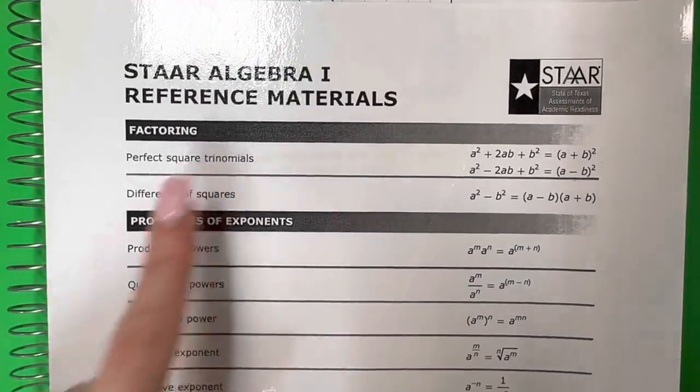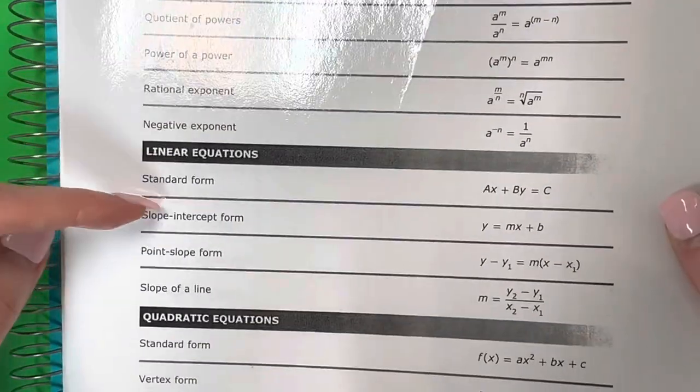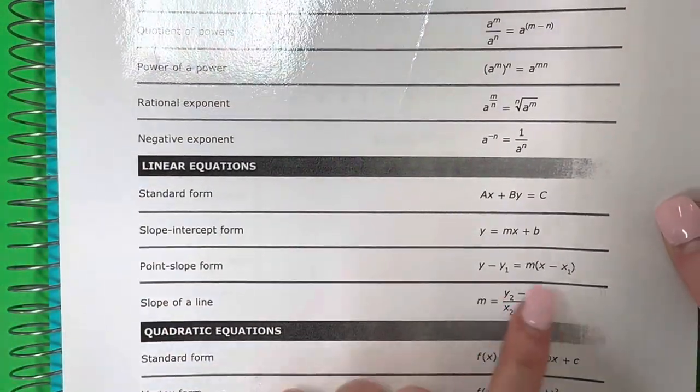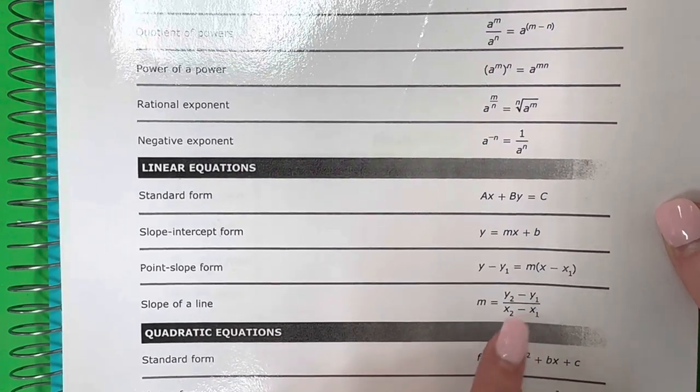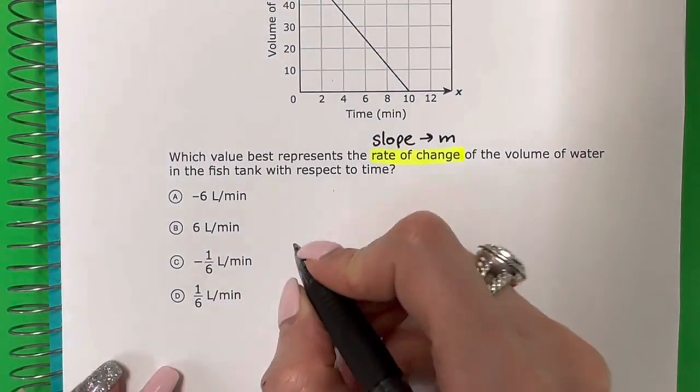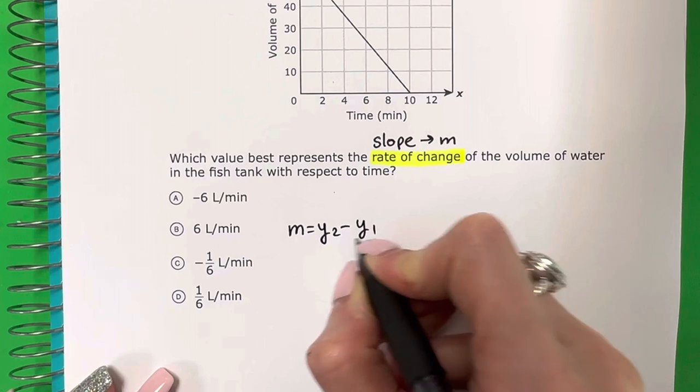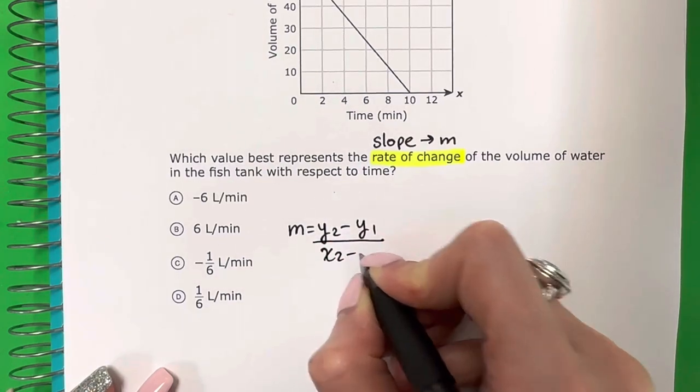We're going to take a look in our reference materials. It's going to be in group 3 and the formula for slope of a line is M equals Y2 minus Y1 divided by X2 minus X1. I'm going to copy that down. M equals Y2 minus Y1 divided by X2 minus X1.